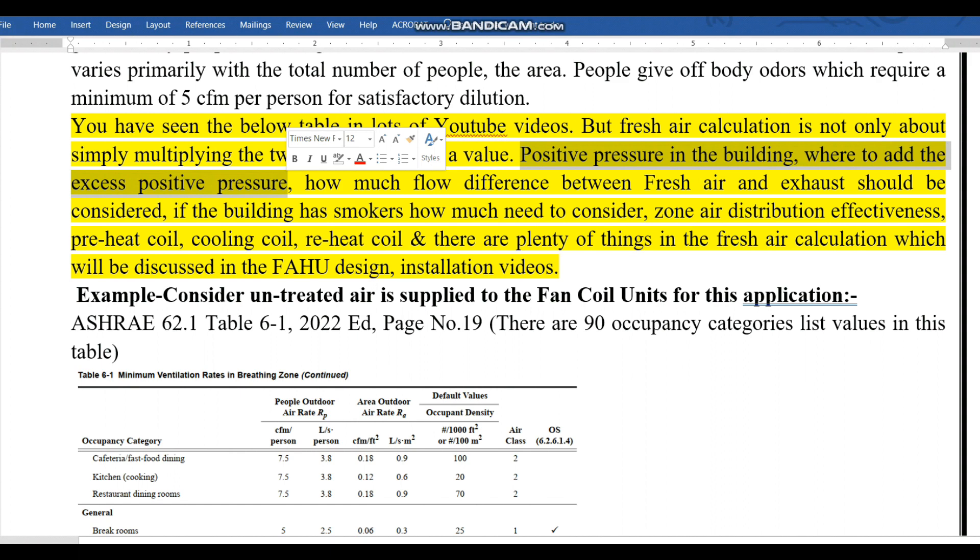If you consider one big commercial building there will be around 50 to 80 rooms. Each room will make the calculation for what positive or negative pressure we need. Finally we need to see the summary of which pressure is very high, whether positive or negative, and where to add the excess pressure.